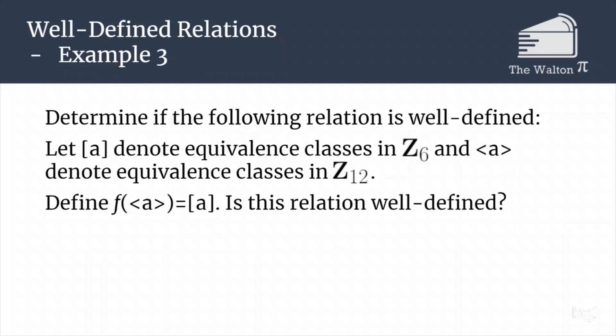Let's look at a similar relation, but this time going from Z12 to Z6, where f(⟨a⟩) = [a]. Take a moment to try and figure out: is this relation going to be well-defined, and if not, can you find the counter-example? Hopefully that was enough time for you to figure out that this relation is well-defined. If you weren't able to figure that out, pause the video and see if you can figure out why.